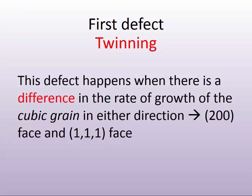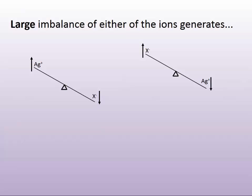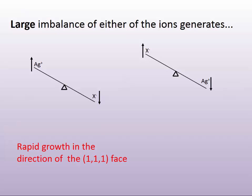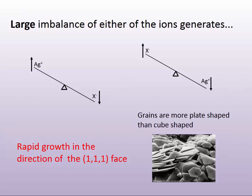The 1-1-1 will be pure in one of either of the two ions as you march in that direction. Any large imbalance of either one of the ions — either silver or the halide — will generate a more rapid growth along the 1-1-1. This is where we see more multi-sided, regular grains that tend to be more plate-shaped than cube-shaped.